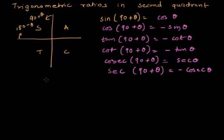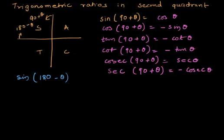Similarly, I have angles with 180 degrees. Sine of 180 degrees minus theta comes in the second quadrant. Because of this 180 degree, sine remains sine, and sine is positive, so it remains positive — sine theta.